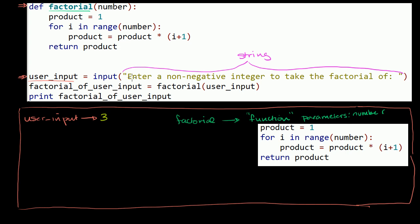Then the variable user input will now refer in this global environment. Now factorial refers to a function. User input will refer to whatever the user typed in. I'm going to go with the specific example of three. Then we go to the next line. And it's saying, look, make factorial of user input.